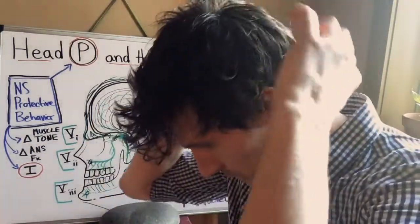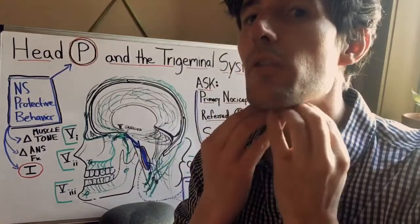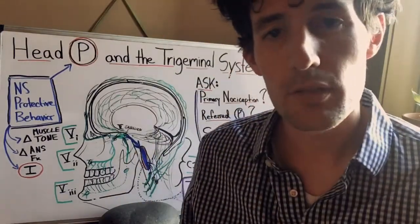So when you think about occipital nerves in the back of the head, when you think about the innervation of this part of the neck, that's C1 through C3.